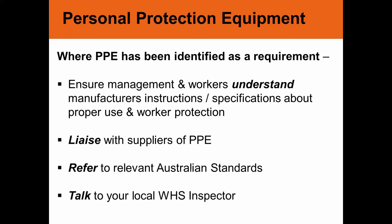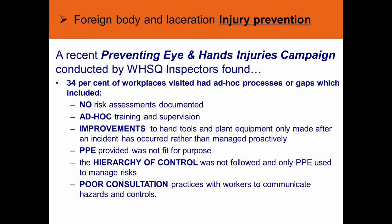Where PPE has been identified as a requirement in your work process, it's very important to ensure that both management and workers understand the manufacturer's instructions and specifications about proper use and worker protection. It's always good to liaise with suppliers of PPE — most are very helpful. Refer to Australian Standards where possible, and get to know your local inspector. A recent Preventing Eye Injuries campaign found that 34% of workplaces visited only had ad hoc processes or gaps, including no risk assessment documentation, ad hoc training and supervision, improvements to hand tools and plant equipment only made after an incident — reactive instead of proactive — PPE that was not fit for purpose, the hierarchy of control not followed, and poor consultation practices.